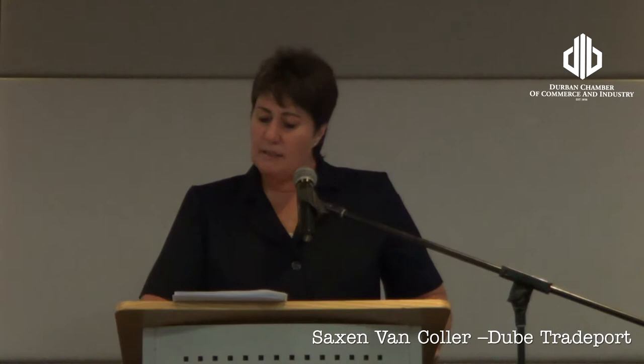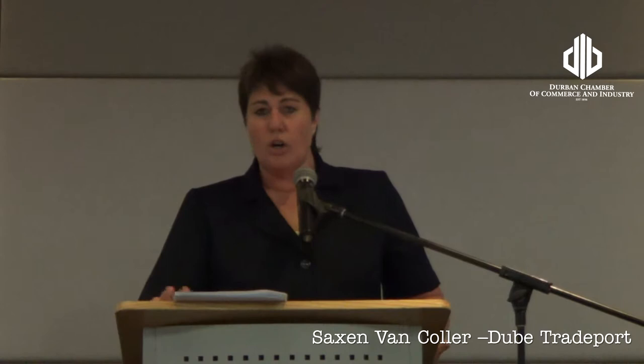The Trade Zone is an advanced, multimodal logistical platform — a specialised, freight-orientated business precinct, ideal for businesses whose supply chain and cargo connectivity is paramount. This precinct comprises 26 hectares in Phase 1, increasing to 77 hectares on completion of Phase 2. We offer fully serviced air-side real estate for warehousing, manufacturing, assembly, air-related cargo distribution, high-tech aerospace services, automotive industries, clothing, textiles and coal storage.